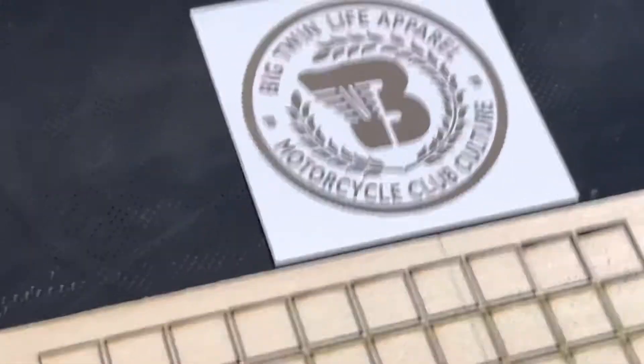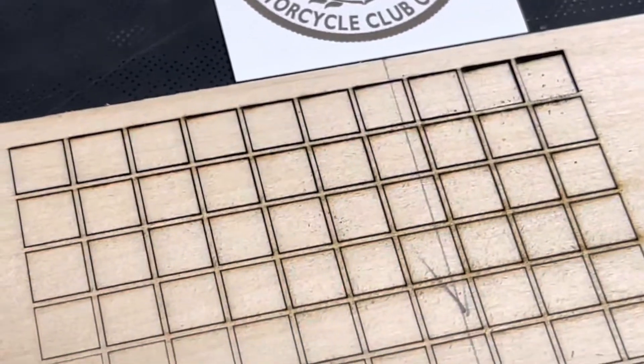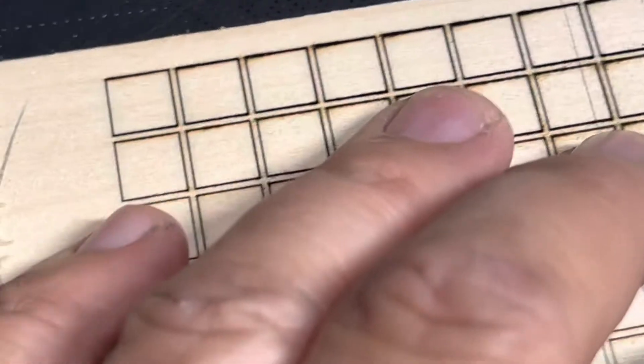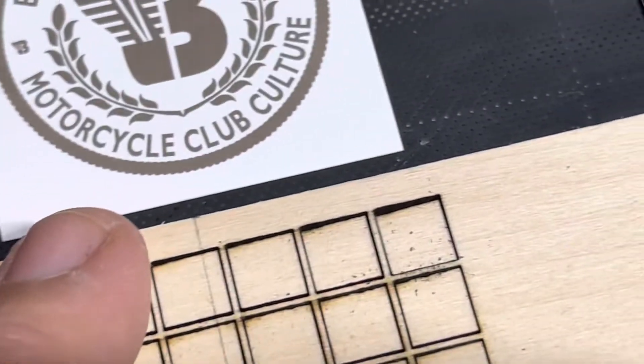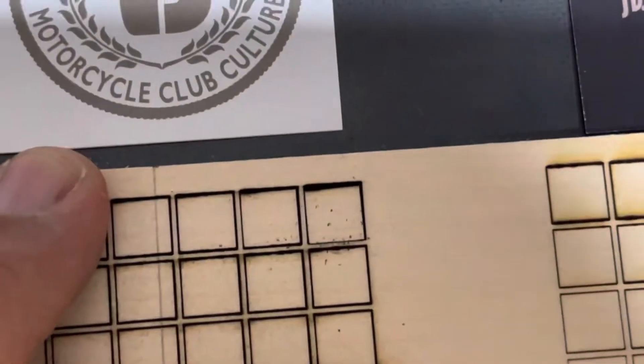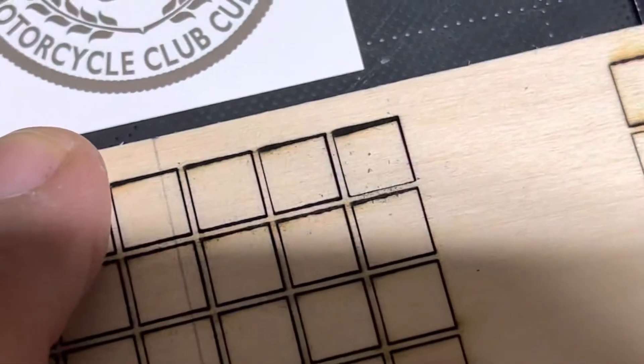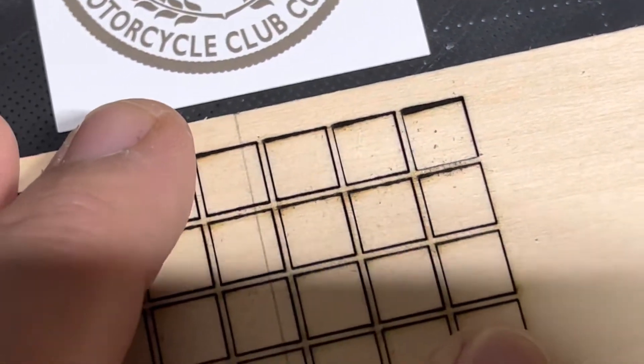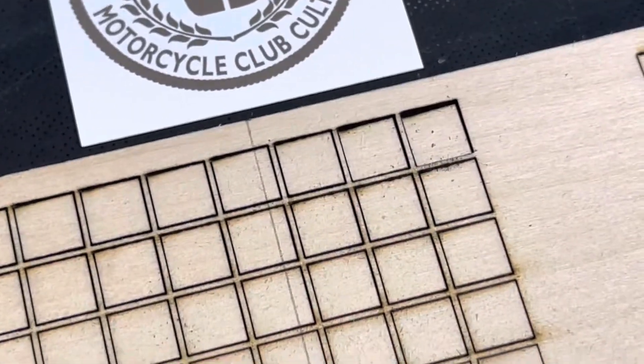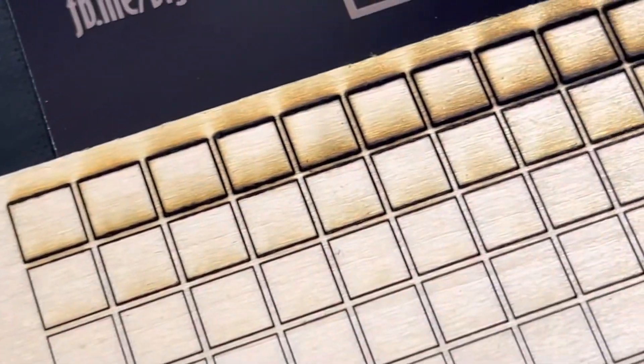Now this is with the Big Twin Life Air Assist. I'm going to press down a little bit right here because I want to make sure you're seeing a good cut there. The reason why I'm doing that is because those pieces are already falling out but you can see definitely how much cleaner your cutting is, how much cleaner the wood surface is.